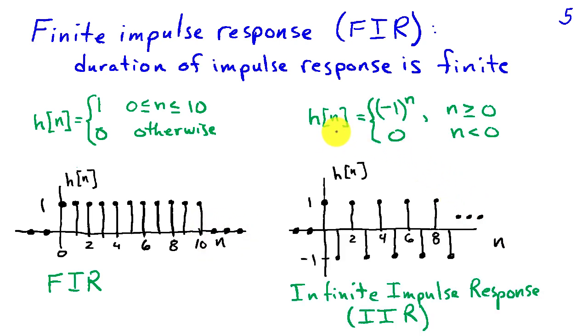Now, in contrast, if h were equal to negative 1 raised to the nth power when n is greater than or equal to 0, and 0 when n is less than 0, then I'd have the scenario that I've graphed down below, where h of n alternates between plus 1 and minus 1. It's minus 1 on the odd indices, and it's plus 1 on the even indices, when n is greater than 0. And you can see that this impulse response never goes to 0. In fact, we'd call this an infinite impulse response system, or IIR system.